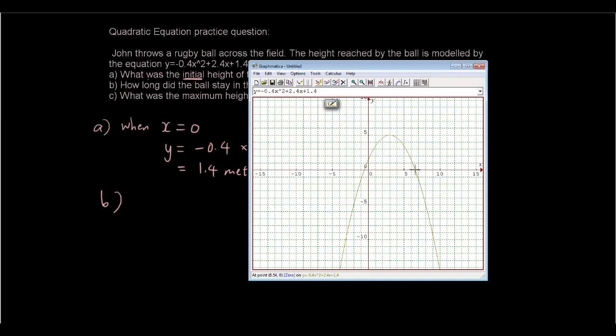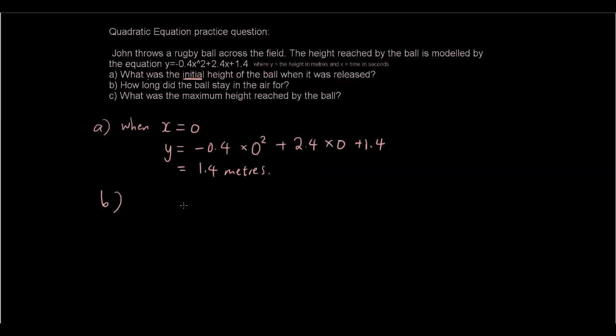And in the end when the ball lands on the ground, so when the height is equal to 0. Basically we want to find out what x equals when the height is equal to 0. So basically we want to find when y is equal to 0, when the height is equal to 0, what's x?